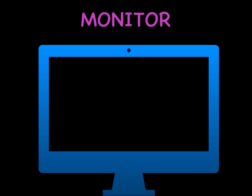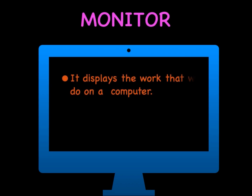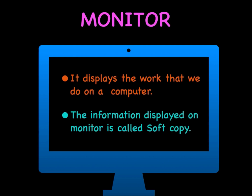Monitor displays the work that we do on a computer. For example, if you are making any painting on your computer, that will be displayed on your computer screen, which is known as the monitor. The information displayed on the monitor is called soft copy. For example, if your teacher provides you a PDF of question answers or book exercises, that is in the form of soft copy that you can see on your computer screen only. But when you take the printout of that PDF, that is known as hard copy, which is on paper that you can touch and feel.